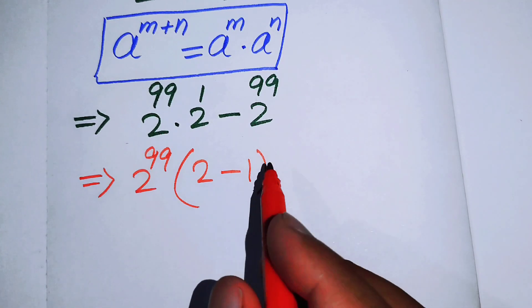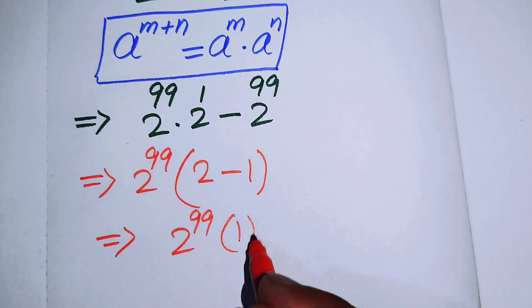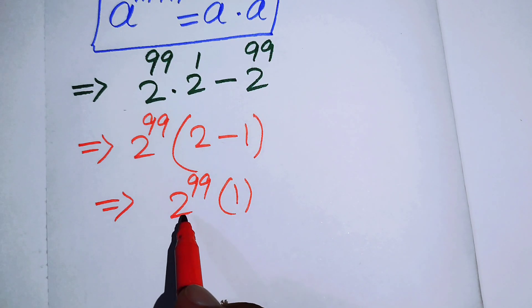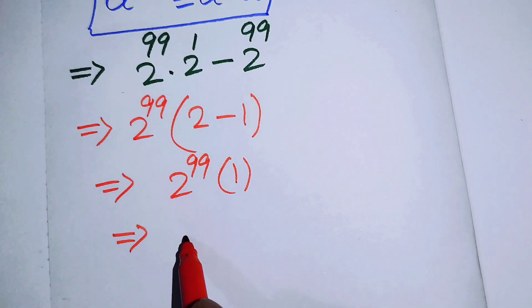Here you see that 2 minus 1 equals 1, and when you multiply 2 to the power of 99 by 1, then you will get 2 to the power of 99. So this is our final answer.